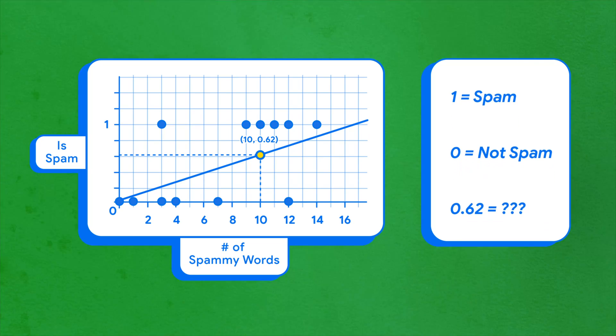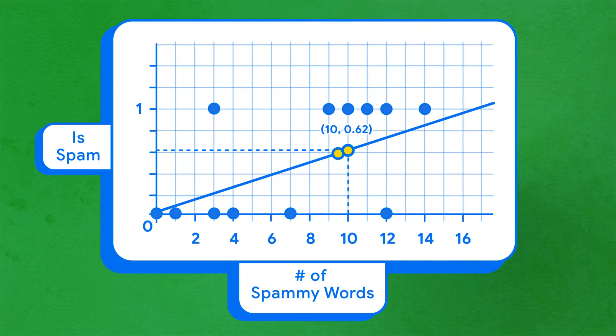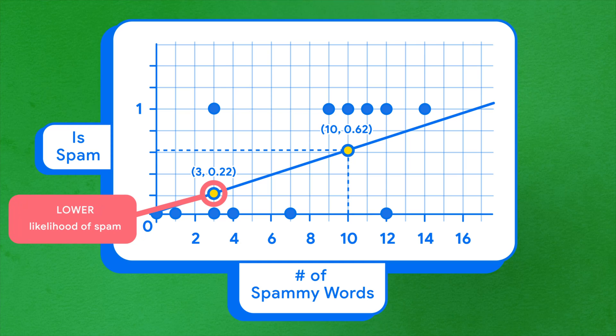But what about a score of 0.62? We can think of this score as an indicator of the likelihood that the email is spam. The lower the value, the less likely it's spam, and the higher the value, the more likely it's spam.